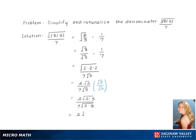Pulling out the pair of threes on the bottom and multiplying on the top gives us 2 square root 6 over 21 as our final answer.